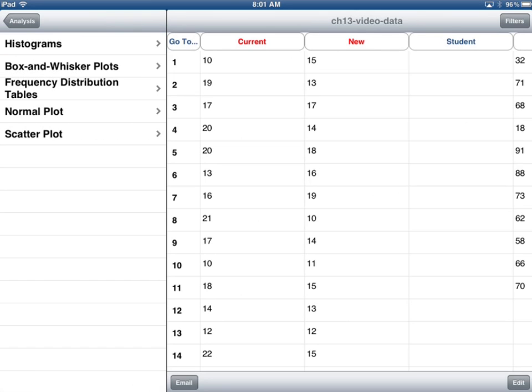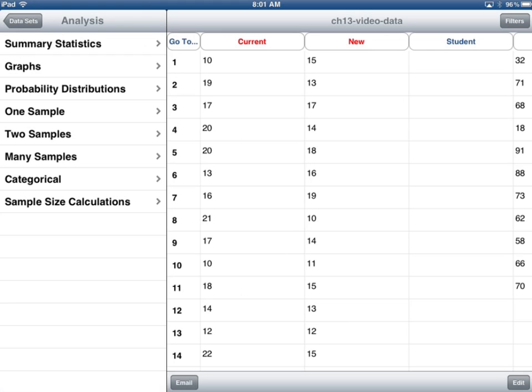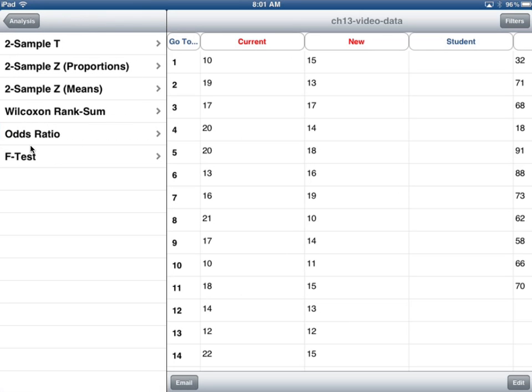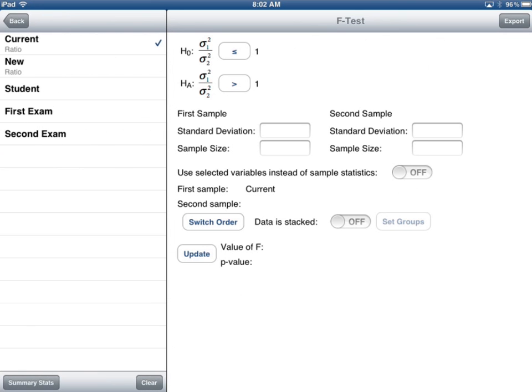So, I will go to where it says two samples, because I'm now dealing with two samples. And, on the bottom here, you see F test. I will select current and new. And, see here, the first sample is current. The second sample is new. That means that this is the same as sigma squared current divided by sigma squared new. So, it matches what I wrote on my paper. And, it's fine the way it is. But for my students, I always tell them, just make it equals. Just make life easier.